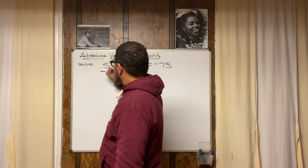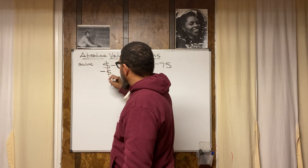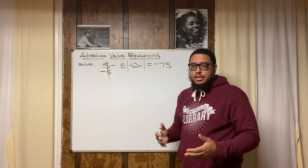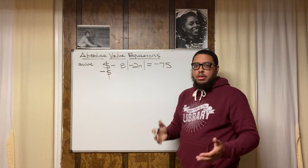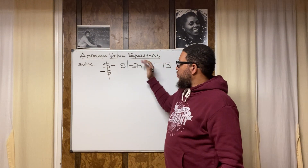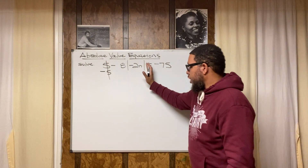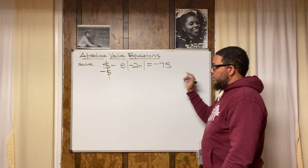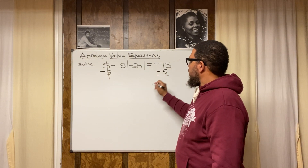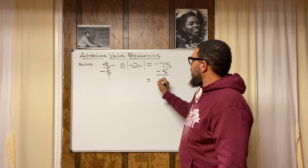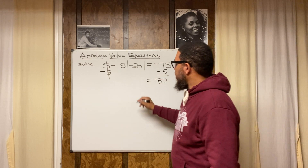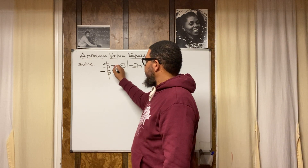We're going to subtract 5 — do it vertically. We deal with balance: if I subtract 5 on the left side of the equation, I subtract 5 on the right side of the equation as well. That gives me negative 80 on the right. So now I have: negative 8 times the absolute value of negative 2n, equals negative 80.